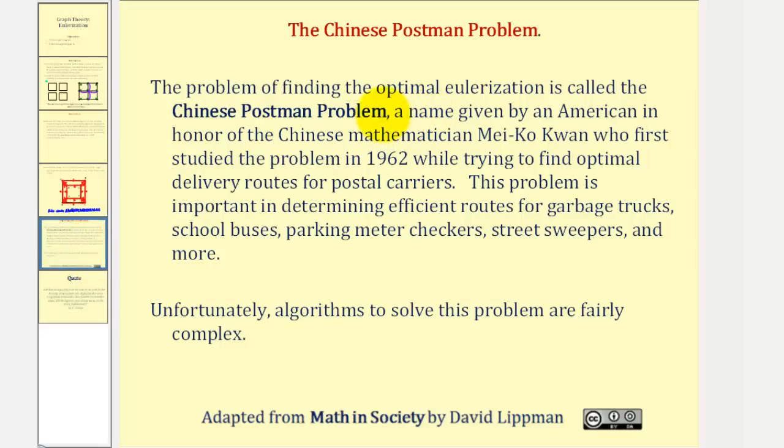The problem of finding the optimal Eulerization is called the Chinese Postman Problem, a name given by an American in honor of the Chinese mathematician Mei-Ko Kwan, who first studied the problem in 1962 while trying to find optimal delivery routes for postal carriers. This problem is important in determining efficient routes for garbage trucks, school buses, parking meter checkers, street sweepers, and many other applications.